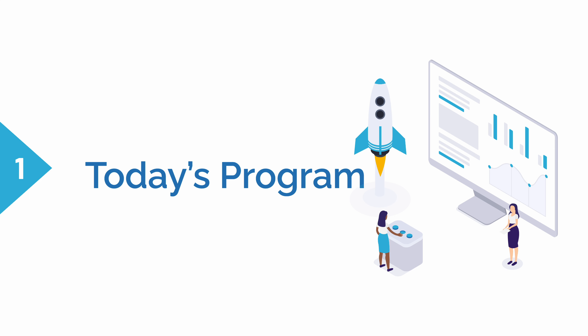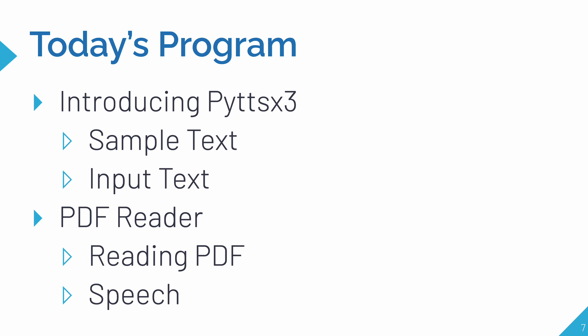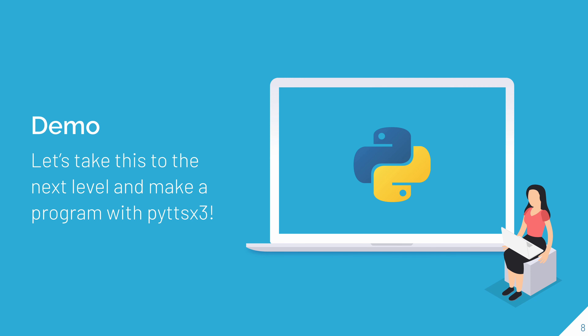Now that you know about PyTTSX3, let's check out today's program. In the demo, first we're going to do some sample text — we'll type text into a variable and it'll say it out loud. Then we'll use an input function where the terminal asks you to type something, and whatever you type, it'll say out loud. Finally, we're going to do an audiobook: take a PDF file, extract all the text from it, and have it say that text out loud.